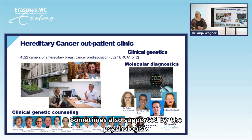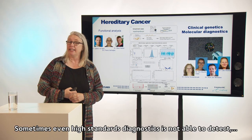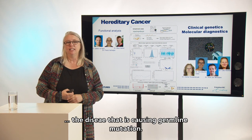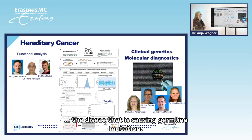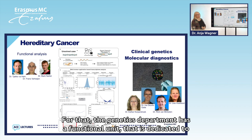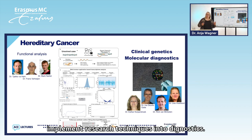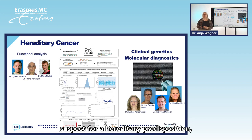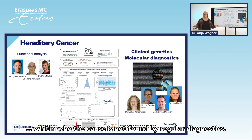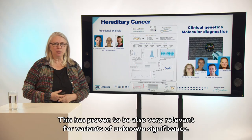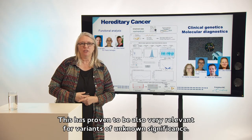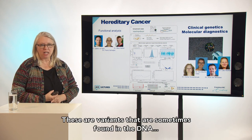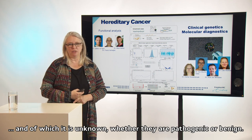Sometimes also high-standard diagnostics is not able to detect the disease-causing germline mutation. For that, the genetics department has a functional unit dedicated to implementing research techniques into diagnostics. For example, using RNA sequencing helps to solve and find cryptic mutations in patients suspected of a hereditary predisposition in whom a cause is not found by regular diagnostics. This has proven to be very relevant for variants of unknown significance — variants found in the DNA of which it is unknown whether they are pathogenic or benign.